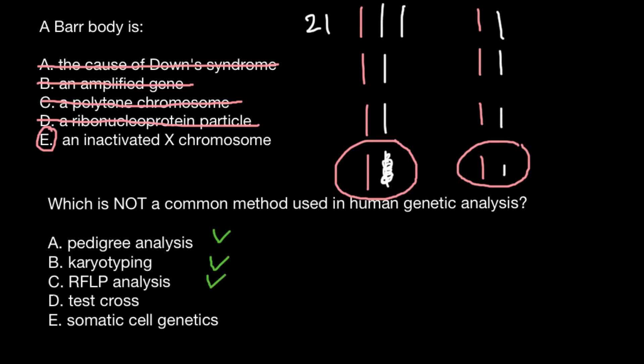So two answers left: answer D, test cross, and answer E, somatic cell genetics. As you see, we call somatic cells all the cells that are not sex cells. So of course we use for genetic analysis both somatic cells and sex cells, so this is also normal for human genetic analysis.